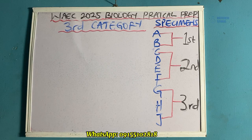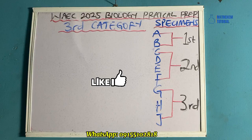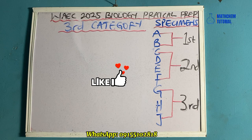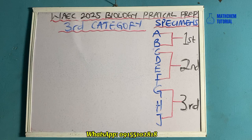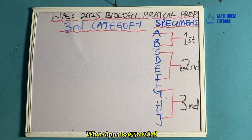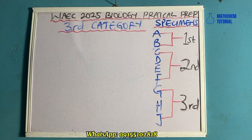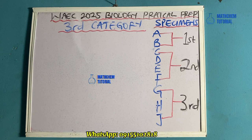This is Y825 biology practical prep, and this is the third category, which is going to be based on specimens G, H, and J. If you are just watching this video for the first time, the first category covers specimens A and B, the second category covers specimens C, D, E, F. This particular video is just about the third category — specimens G, H, and J. Remember there is no I; it is J.